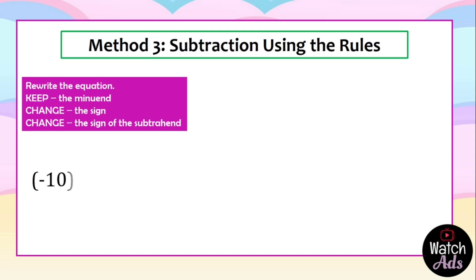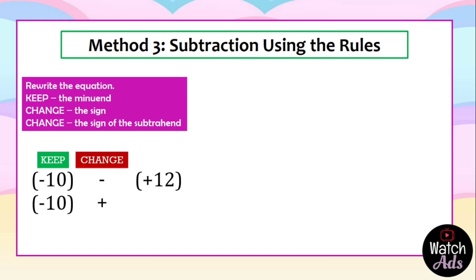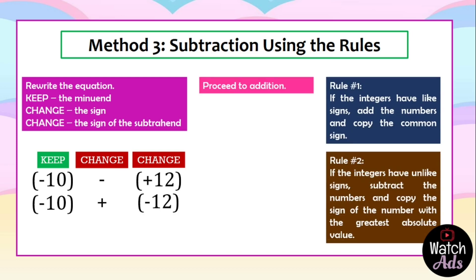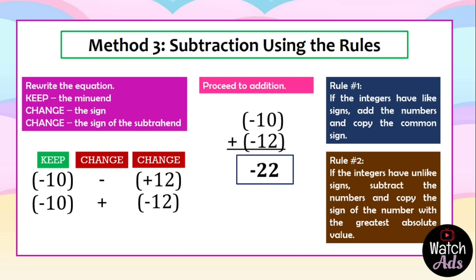Next: negative 10 minus positive 12. We keep the minuend — that's still negative 10. Change the sign. Then change the sign of the subtrahend from positive 12 — it becomes negative 12. We proceed to addition. Which rule do we follow? Same signs. Negative 10 and negative 12 are both negatives. So we add the numbers and copy the common sign. The final answer is negative 22.